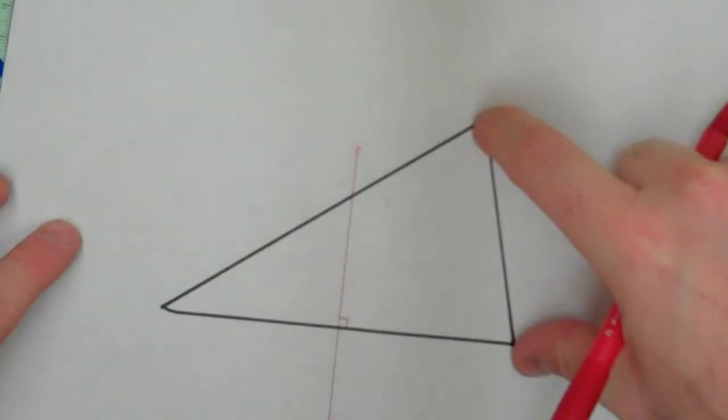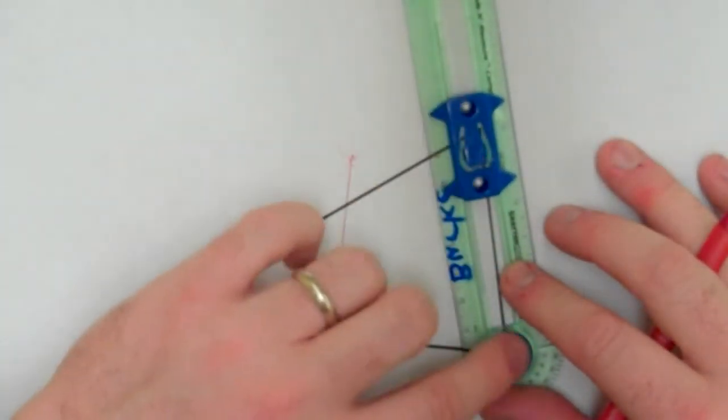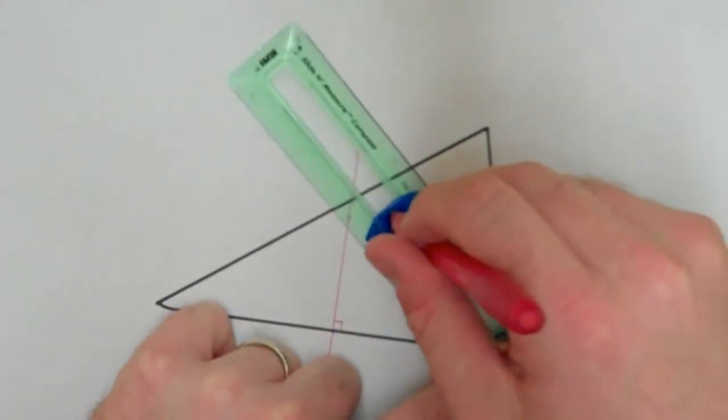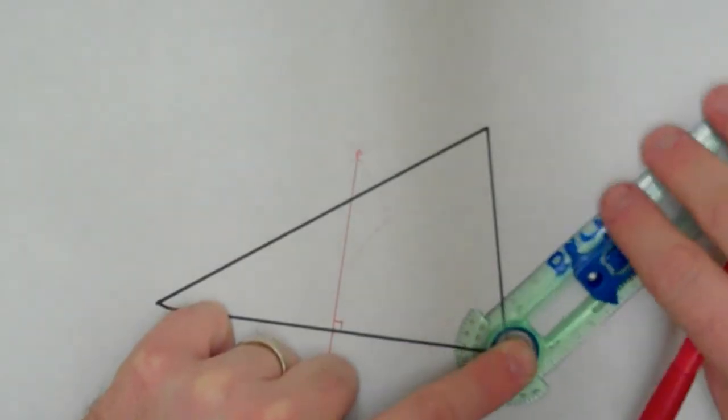So now I'm going to create the perpendicular bisector of this segment right over here. I'm going to follow the same process. Point of the compass, open it up more than halfway, make a mark on this side, and one on this side.